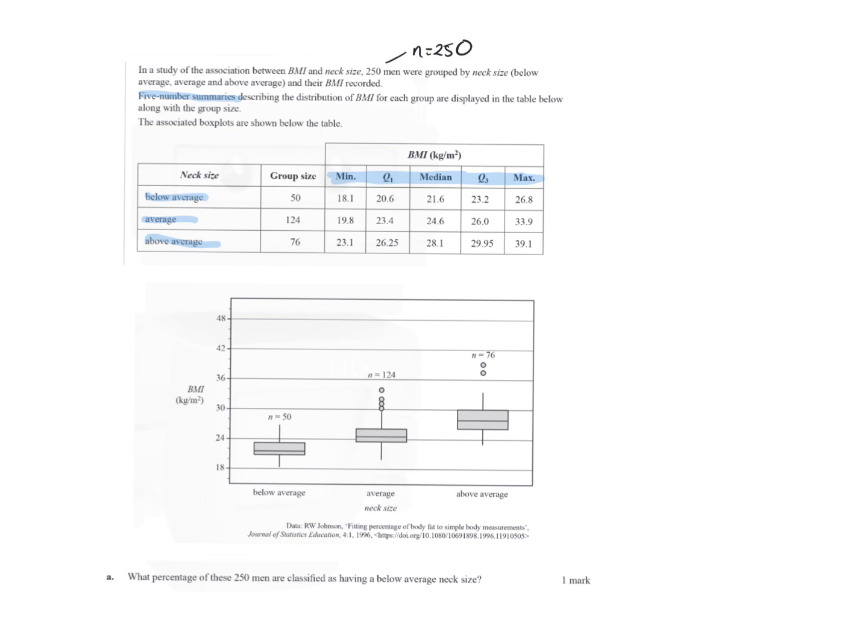In the study, there was an association between BMI and neck size. There was 250 men in the group. The five number summaries are shown below in the table. What percentage of these 250 men are classified as having below average neck? So we look for below average, and they're saying a percentage, but we've got 250 in total. They've given us how many there is actually in that category.